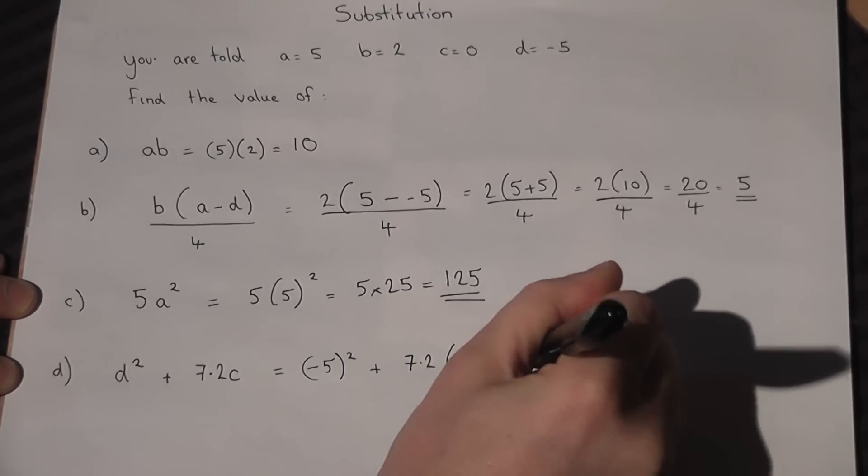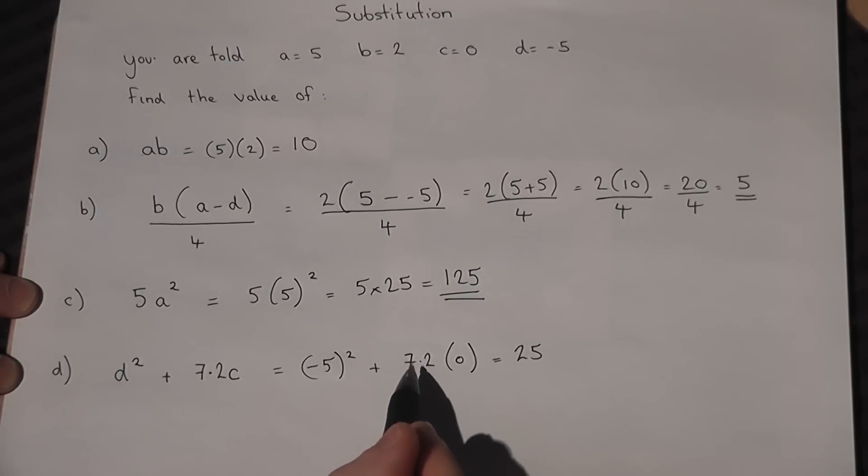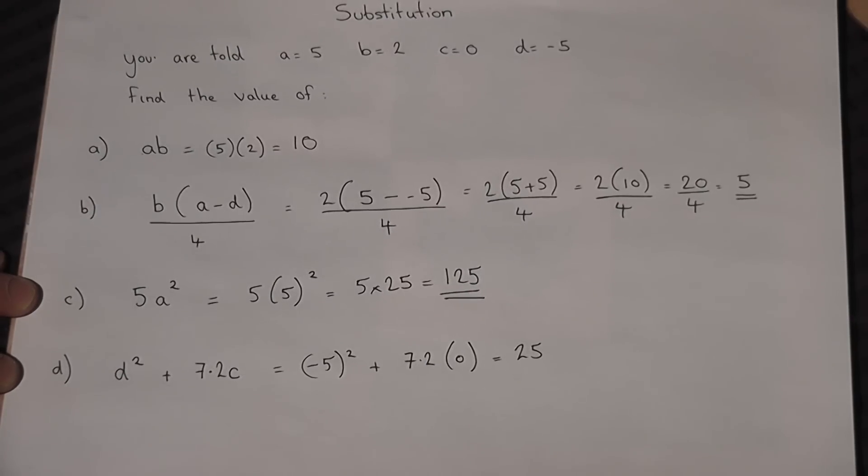Minus 5 times minus 5 is plus 25. When we square a negative, it becomes positive, and 7.2 times 0 is 0. So it's 25 plus 0, which equals 25.